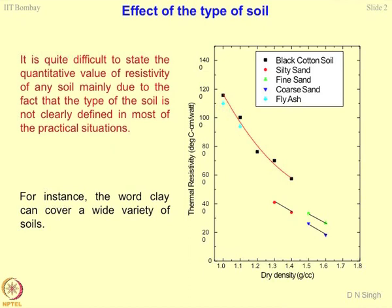There are two things associated with type of the soil. One is the origin or the composition, and the second is the size fraction. The state of the art is not sufficient to address the origin of the soil and how it influences thermal properties. But enough work has been done on grain size fraction distribution and its effect on thermal properties.